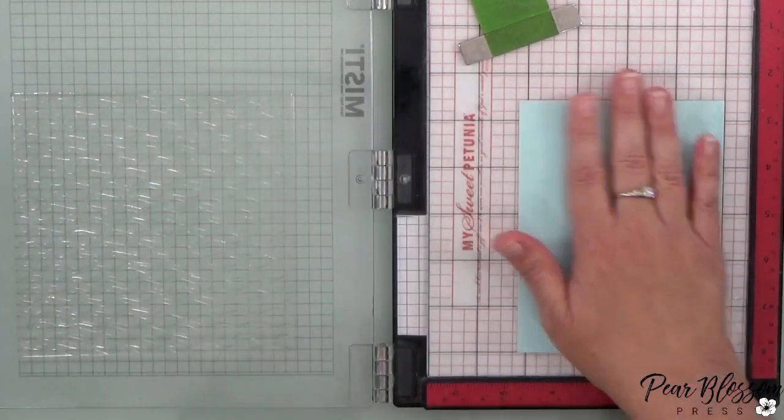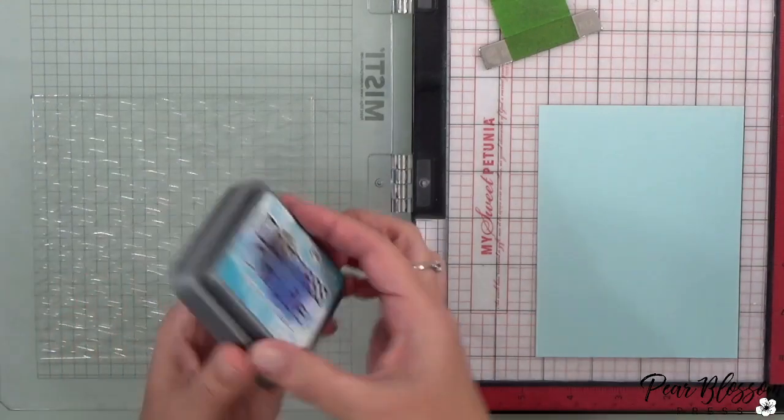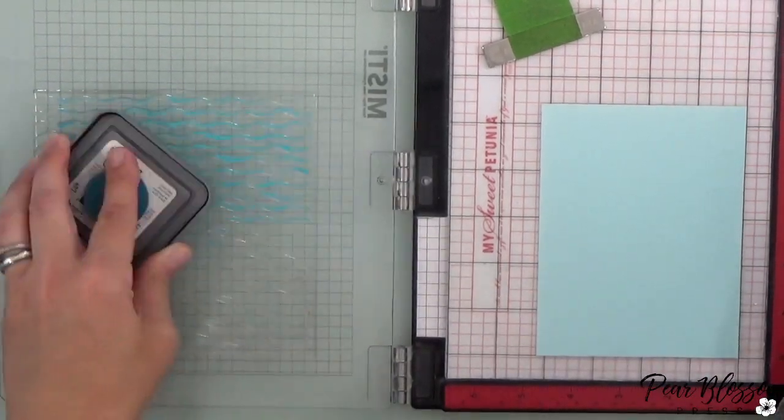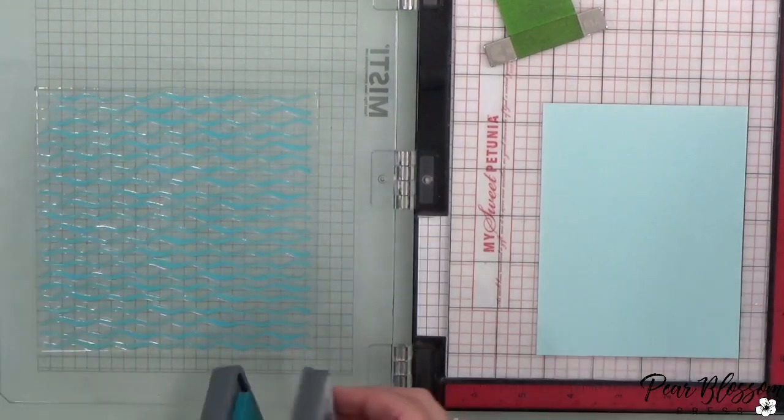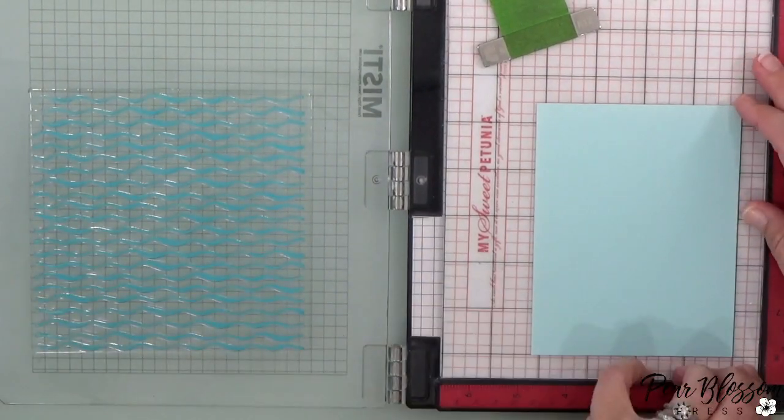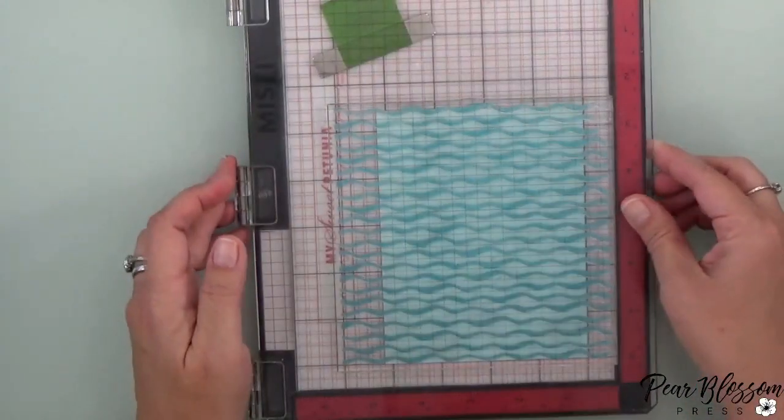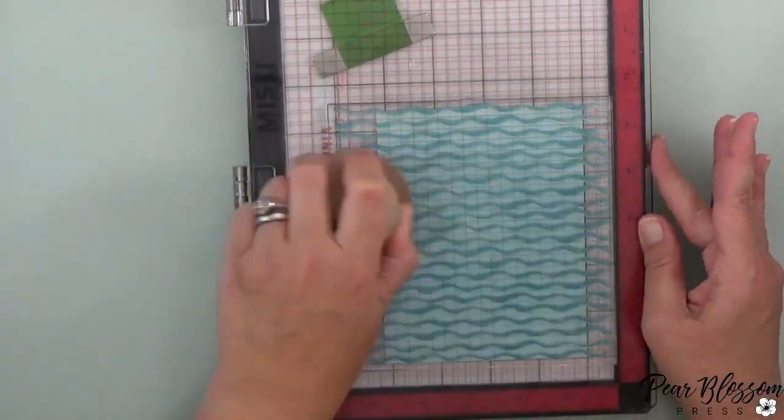Whenever you're working with a big stamp like that, try to get out all the air bubbles. And then I'm doing a little bit of cleaning because this is the first time I've ever used the stamp, so I want to just kind of clean it up, make sure that it's kind of preconditioned so that the ink won't bubble up on there if there's any of the oils or anything left from the factory.